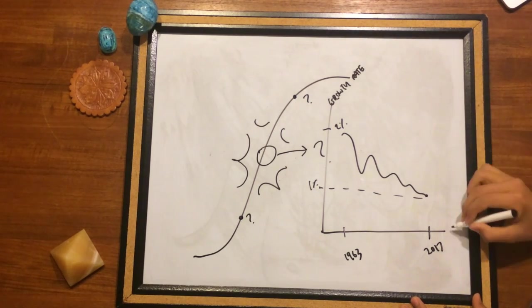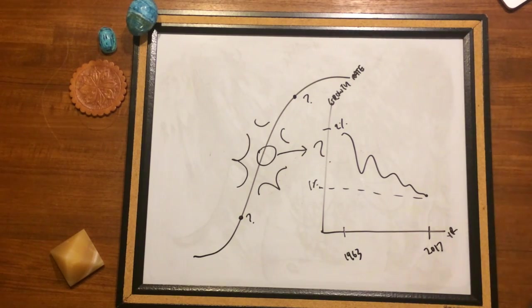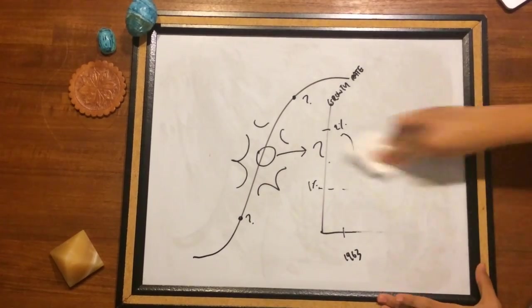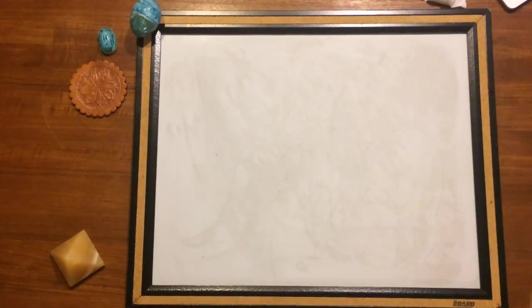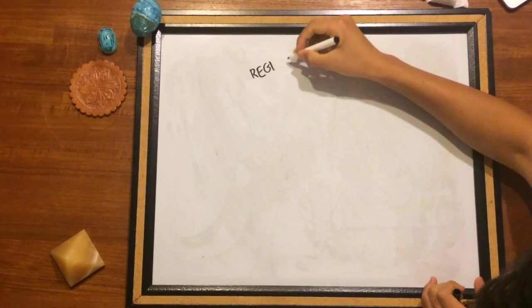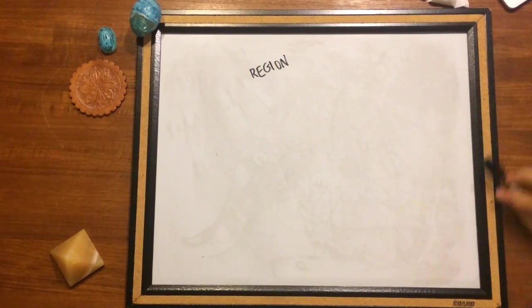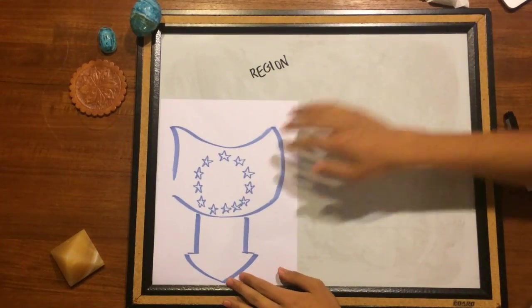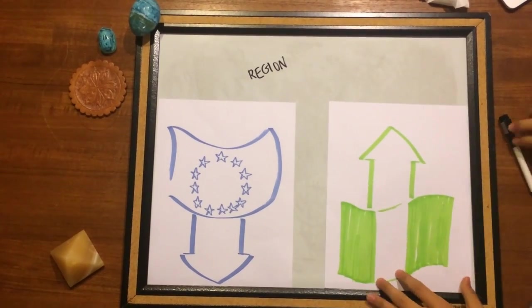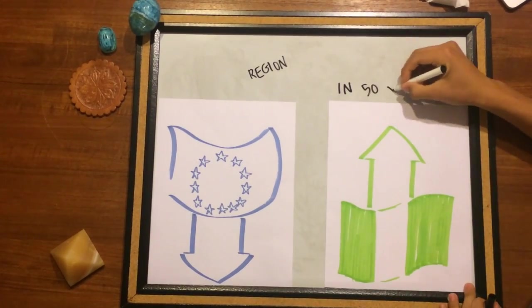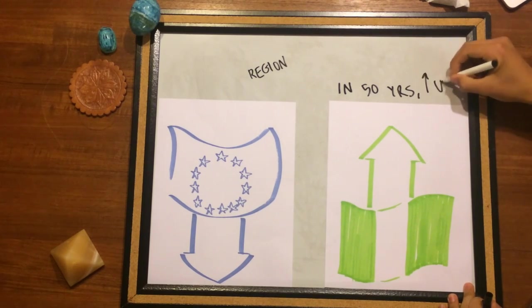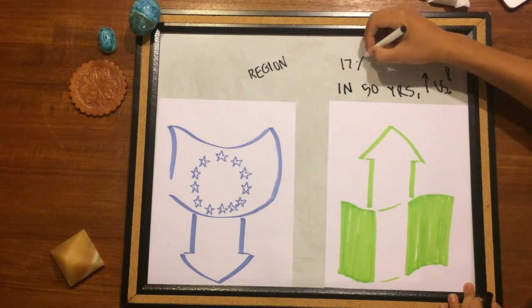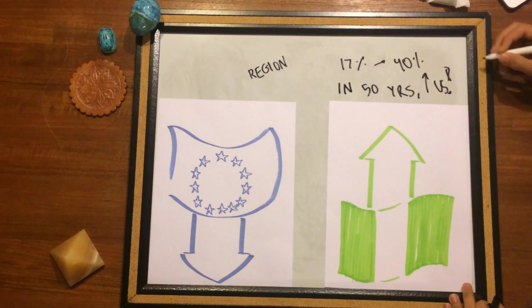But just looking at the world growth rates doesn't tell the whole story. If you look at growth rate by region, it shows that we may be headed in another direction. While overall population is declining in Central Europe and the Baltics, it is booming in Africa. Nigeria is projected to pass the United States in population in the next half century. And Africa's portion of the world population is set to expand from 17% today to 40% by 2100.